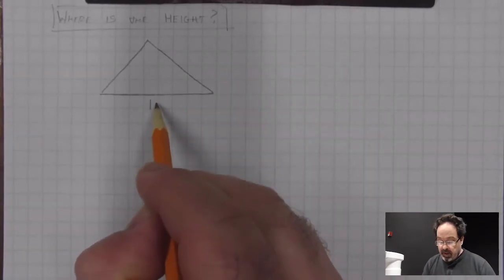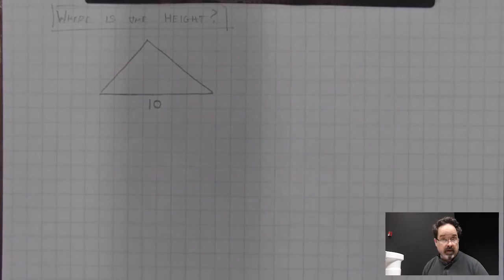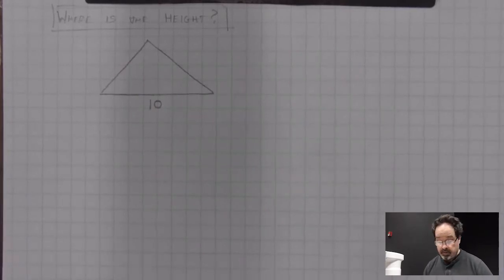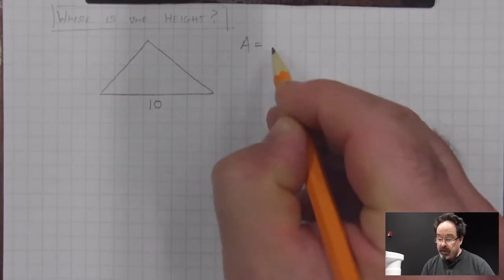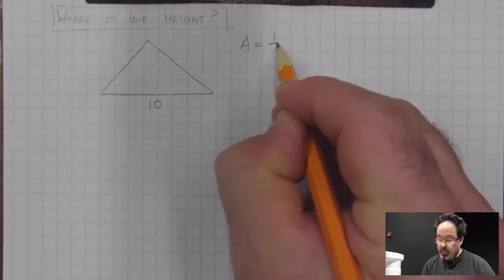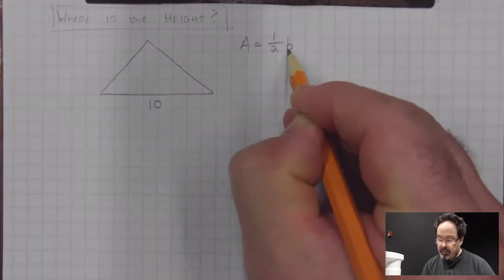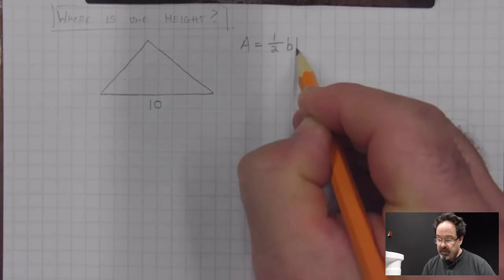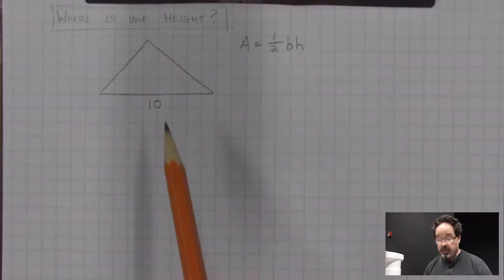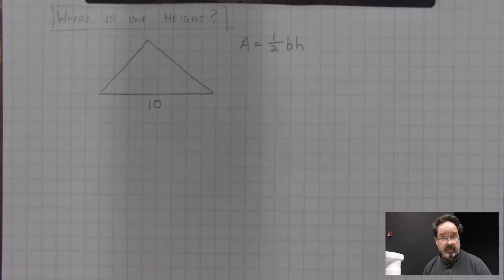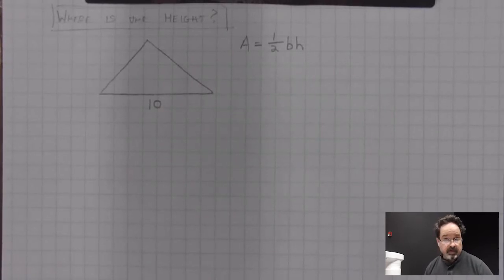We may have a base of 10, but we need another measure in order to calculate the area. The formula for area of a triangle is one-half times the base times the height. And the base is going to be the measure of one of its sides. It doesn't have to be the side that's on the bottom.